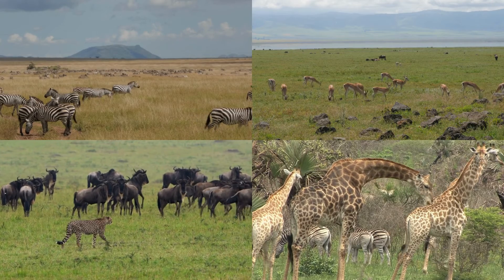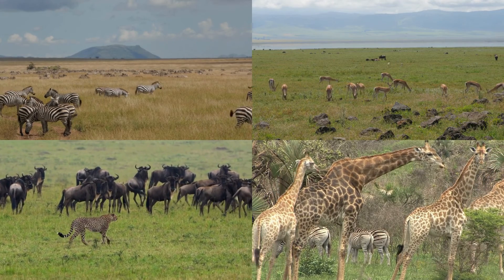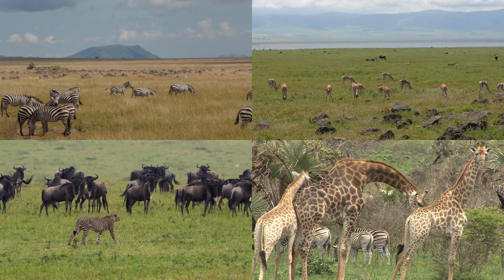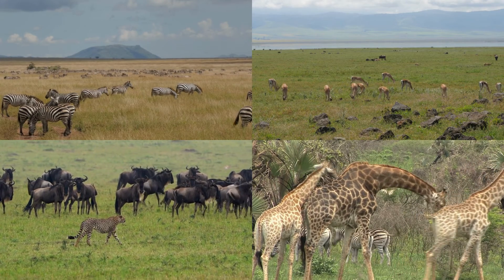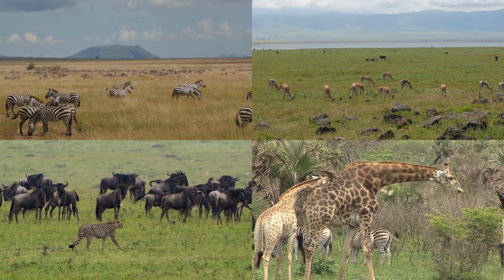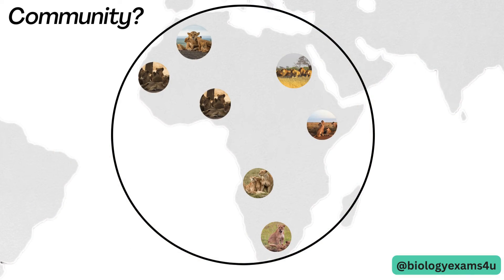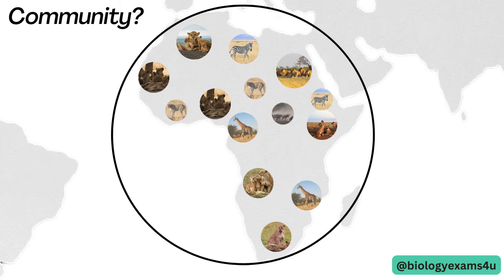In the national park there are many other organisms that directly or indirectly affect these lion populations. That includes zebra, deer, wildebeest, cheetah, giraffe, etc. So other than lion population, there are many other species living along with these lion prides — zebra population, cheetah population, wildebeest population, and like that.